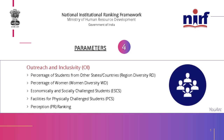The fourth parameter is Outreach and Inclusivity. This covers the percentage of students from other states or countries, regional diversity, percentage of women in education, support for economically and socially challenged students (ESCS), and facilities for physically challenged students. This moves beyond academics into social facilities, amenities, and student diversity.